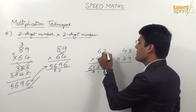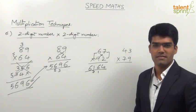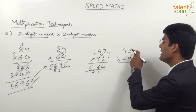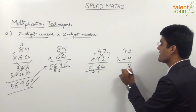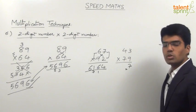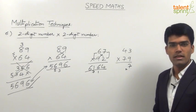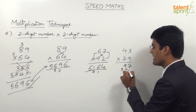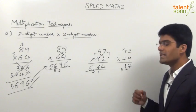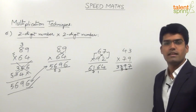The first step is multiplication of units places, second step is cross multiplication, and the third step is multiplication of tens places. Following the same technique, let us find the answer for 43 into 79. 3 into 9 is 27, so 7 is in the answer and 2 gets carried forward. Then 4 into 9 is 36 and 7 into 3 is 21. 36 plus 21 is 57. 57 plus 2 carry is 59. So 9 in the answer and 5 gets carried forward. Last step: 4 into 7 is 28. 28 plus 5 is 33. So the answer is 3397.